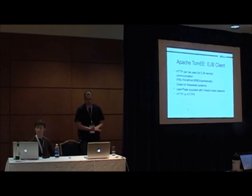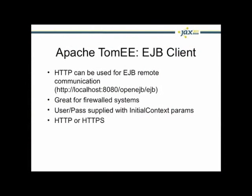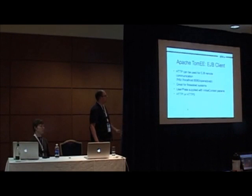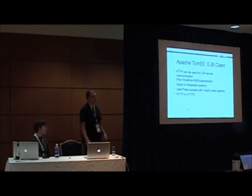One of the nice things we can do with Apache TomEE is hook up an EJB client somewhat differently from other remote EJB clients. We can actually use HTTP as the protocol for communicating. So you can just create a remote client pointing at a URL, substitute in the IP address of the remote system, and just start looking up your beans and calling methods. It's pretty useful if you don't want to open up another port on your firewall.